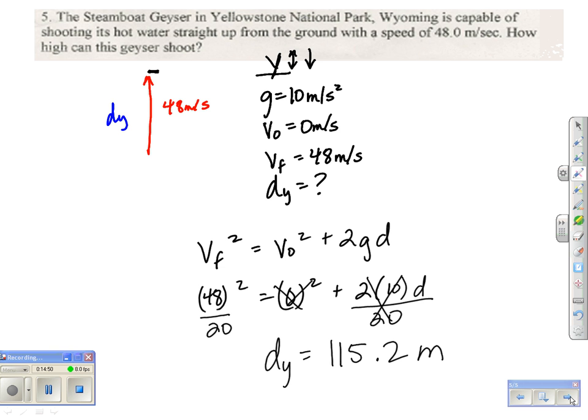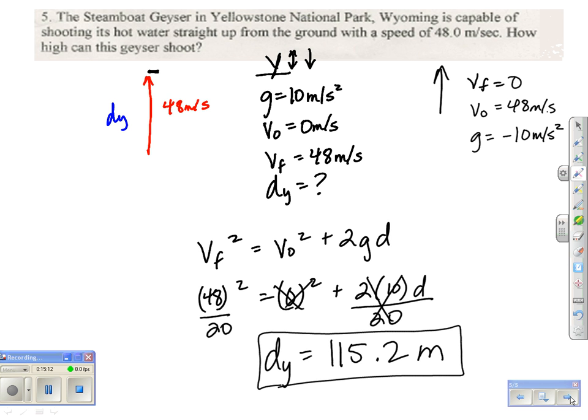Hopefully, everybody enjoys this. I could also have worked with the up trip here. If that was the case, then my final velocity would have been 0. My initial velocity would have been 48 meters per second. But I would have used gravity being negative 10 meters per second squared. You'll get the same answer either way you do it because you'll plug it into the same equation. But if you're ready for your exam, you'll have some projectile problems and vector problems. And good luck.